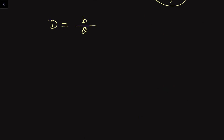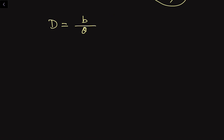From our previous tutorial we established the relation: D = b / θ, where θ is in radians, b is in meters, and D is also in meters. According to this question we need to find the value of θ, the parallax angle. Rearranging, θ = b / D.